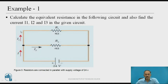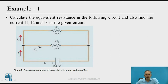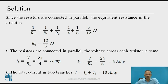Take one problem: calculate the equivalent resistance in the following circuit and also find the currents I1, I2 and I3 in the given circuit. This is a circuit diagram having a battery or voltage source equal to 24 V, with two resistances R1 and R2 connected in parallel, having values R1 = 4 Ω and R2 = 6 Ω. Since the resistors are connected in parallel, the equivalent resistance is: 1/Rp = 1/R1 + 1/R2.